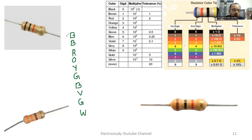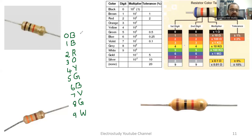Starting from zero, remember: 0, 1, 2, 3, 4, 5, 6, 7, 8, 9. The first color will be black, next is brown, next should be red color, then orange, then yellow.